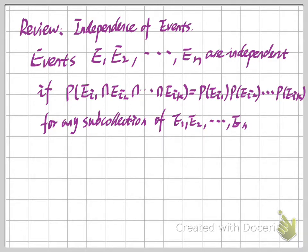For independence of events, it means if we know the probability of the intersection equals the product of the probabilities for all sub-collections of the group of events, then we can say these events are independent with each other.